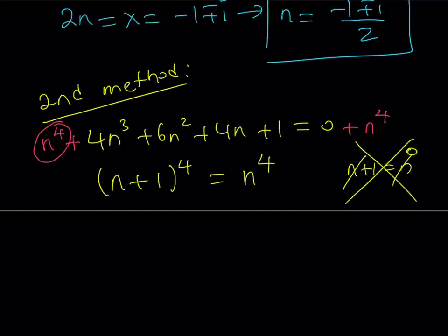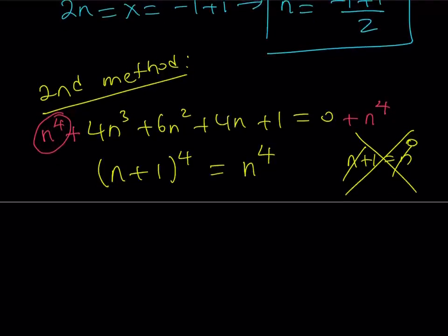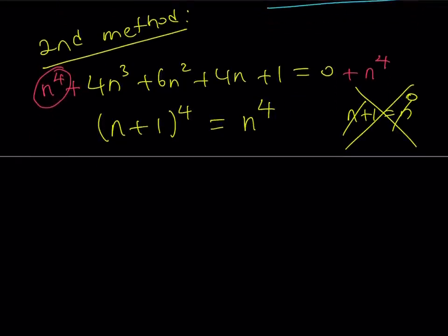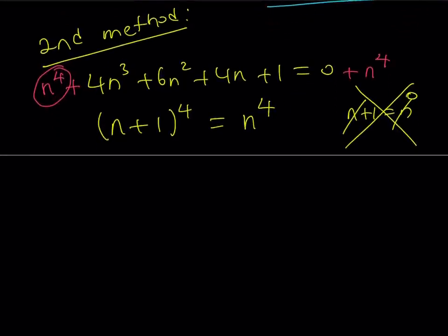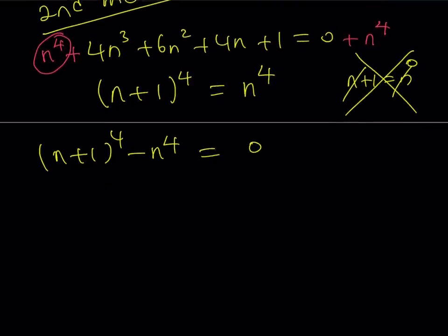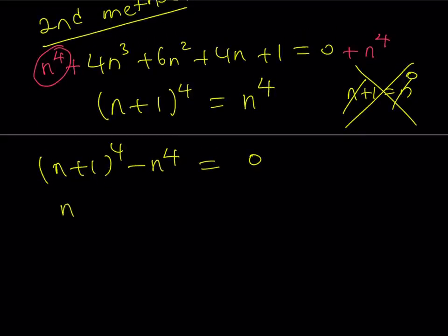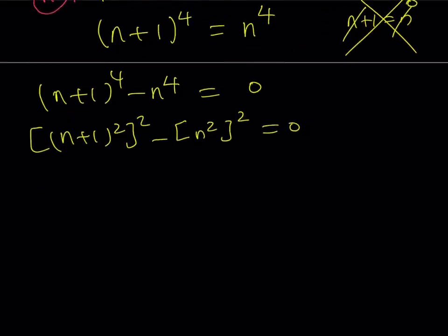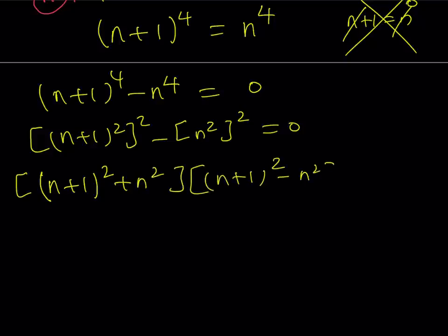There are different ways to proceed. We can do the following: let's put everything on the same side. For solving equations, putting things on the same side seems to be a good method. I can think of this as [(n + 1)²]² - [n²]². What does that mean? It means we have a difference of two squares. We can factor that: a² - b² = (a + b)(a - b).